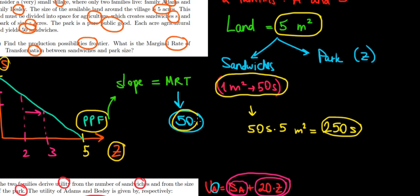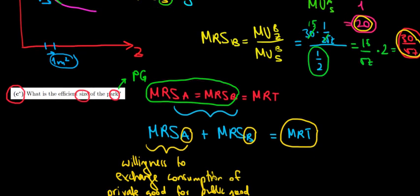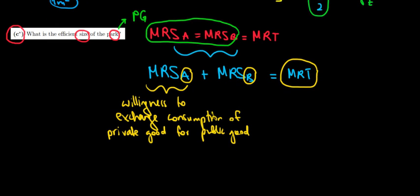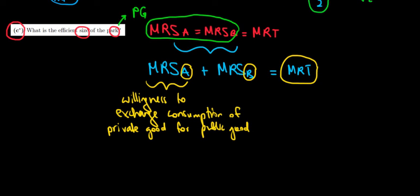That is the opportunity cost of getting one more meter square for the park. So with this in mind, we can solve the math over here. The marginal rate of substitution for A, that would be equal to 20 plus the marginal rate of substitution for B. That's 30 divided by square root of Z and the marginal rate of transformation is equal to 50.